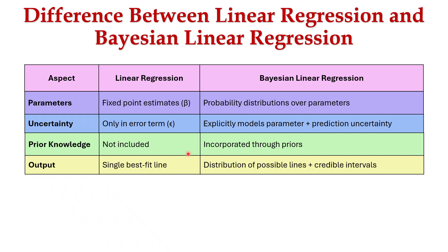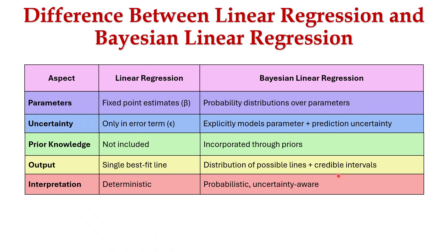With respect to output, linear regression has a single best-fit line, whereas Bayesian linear regression has a distribution of possible lines with credible intervals. With respect to interpretation, linear regression is deterministic, whereas Bayesian linear regression is probabilistic and uncertainty-aware.